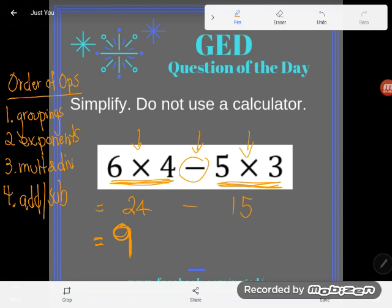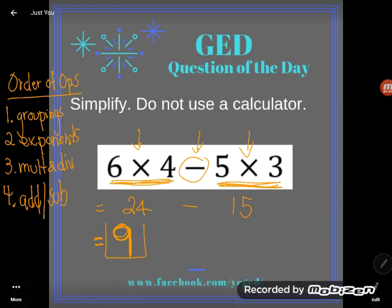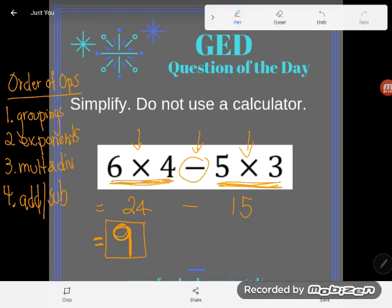Okay, so 24 - 15, that is 9. Wonderful. If you have any questions about this or any other GED math topic, be sure to drop it in the comments and I'll do my best to answer it.